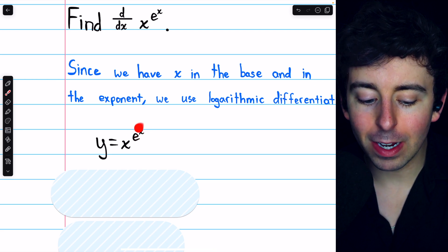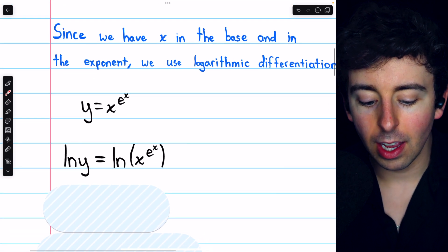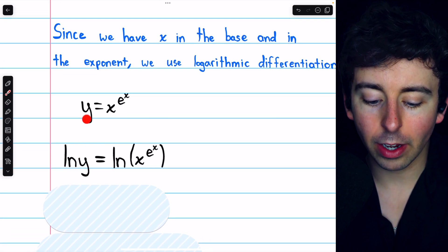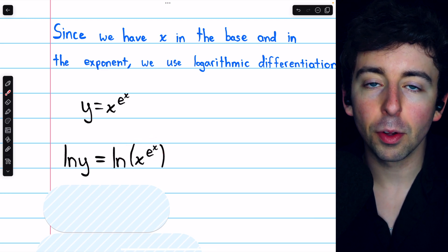Then, to get this variable out of the exponent, we're going to take the natural log on both sides. So we have the natural log of y on the left and the natural log of x to the e to the x on the right.